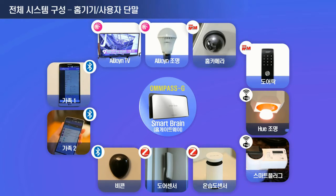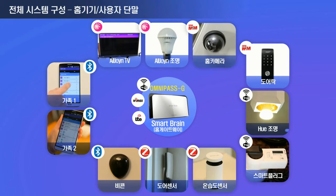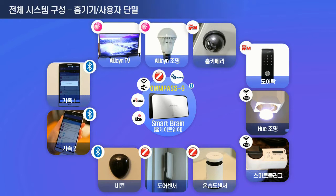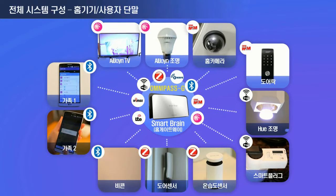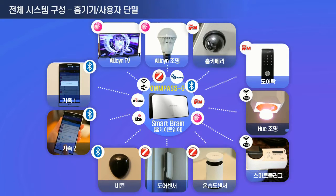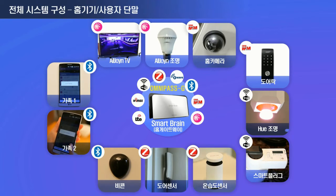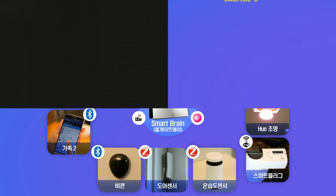SmartBrain is the core appliance for smart home service. It supports LTE, WiMAX, and Wi-Fi connections in addition to ZigBee, Z-Wave, and Bluetooth. SmartBrain has platforms for oneM2M and AllJoyn to provide connection among different home appliances.